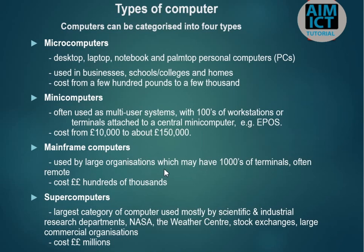Mainframe computers often have remote terminals. For example, a bank can have a branch in one location and another branch in a different country, and they share data remotely — that is what we call a mainframe computer. We also have supercomputers. In Africa, there are almost five countries with supercomputers, including Tanzania, Cairo, South Africa, and Nigeria. These are large computers used by large industries such as NASA for checking, comparing, analyzing, and manipulating large amounts of data.